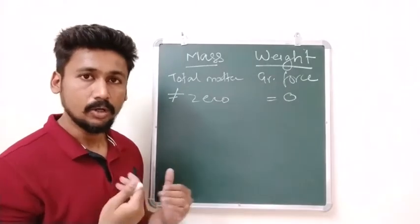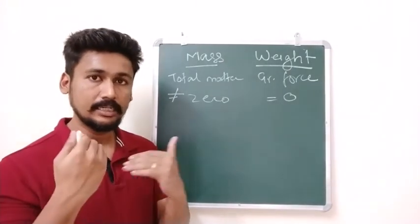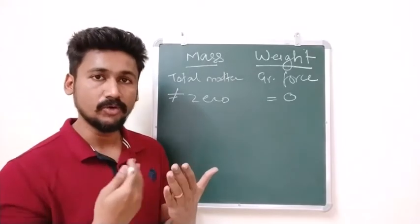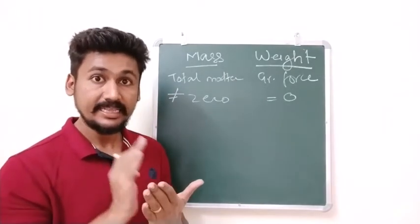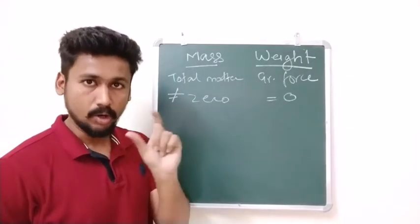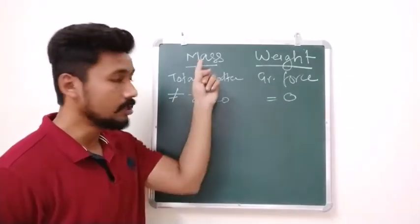But it is possible that weight of an object is equal to zero. How is that possible? Because imagine you are in space when there is no gravitation force acting on you. There is no object around you. In that case the object can have zero weight. But an object it cannot have a zero mass.